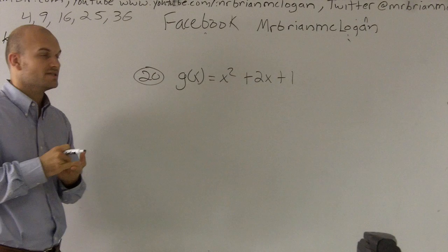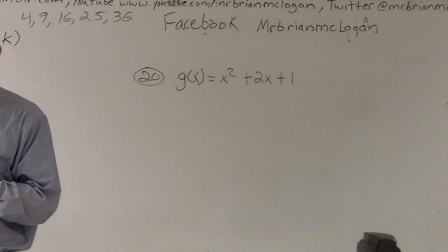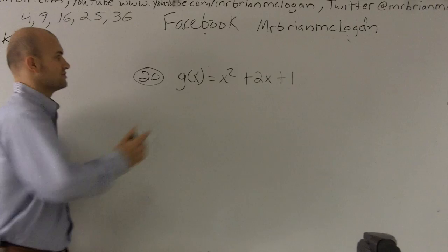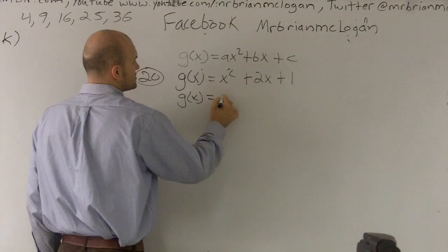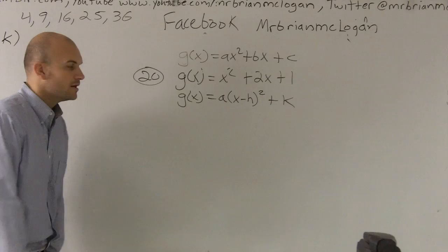So the first thing that we need to do is remember how we're going to write our equation so we can find the vertex. There's two forms that we use. We have our quadratic form, which is ax squared plus bx plus c. And then we also have our standard form, which is equal to a times x minus h squared plus k.